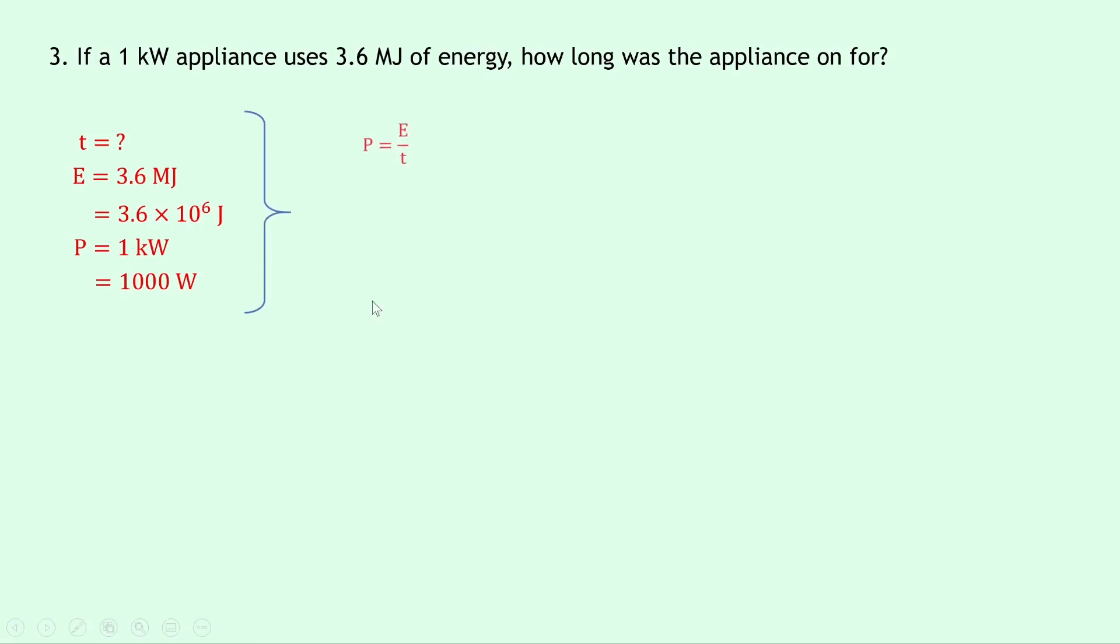So writing down our equation then, we have p equals e over t, and rearranging for time, we can actually just swap the p and t, so we get t equals e over p, and putting in our numbers now gives us 3.6 times 10 to the 6 divided by 1000. And if you put that into your calculator, you should get an answer of 3.6 times 10 to the 3 seconds.